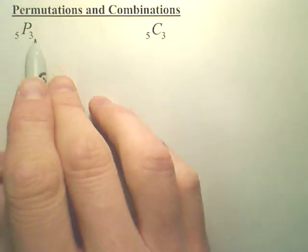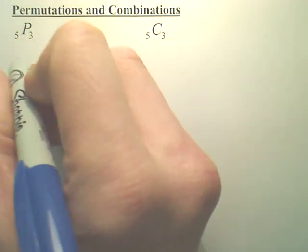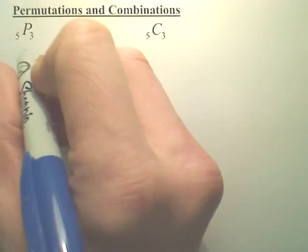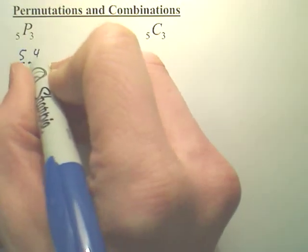The real simple way is 5P3 basically is saying you start with 5 factorial, but you only want the first 3.